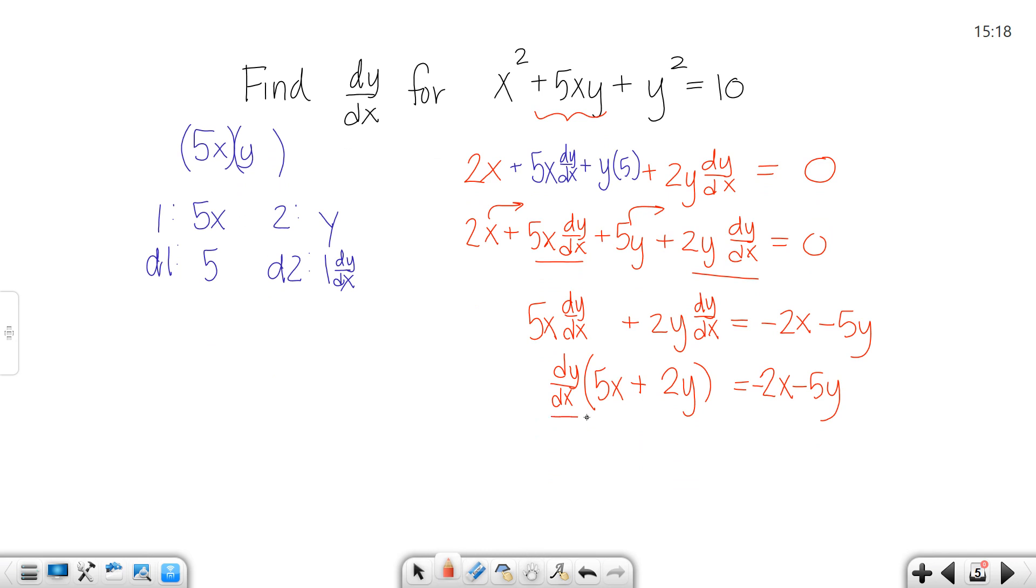To get dy/dx by itself we can divide by that term, expression rather, and dy/dx would equal negative 2x minus 5y over 5x plus 2y.